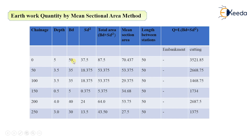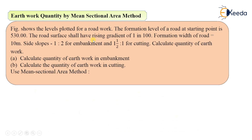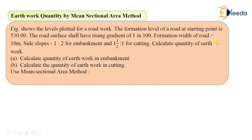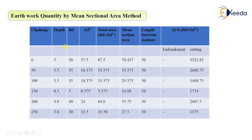For S×D², the side slope S depends on whether the section is in cutting or embankment. For embankment S = 2, and for cutting S = 1.5. Note: the correct statement should be 1:2 for embankment and 1:1.5 for cutting.